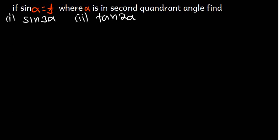We have a very interesting question which is under trigonometry. The question says: if sine alpha equals 1 over 3, where alpha is in the second quadrant, find Part 1: sine 3 alpha, and Part 2: tan 2 alpha.